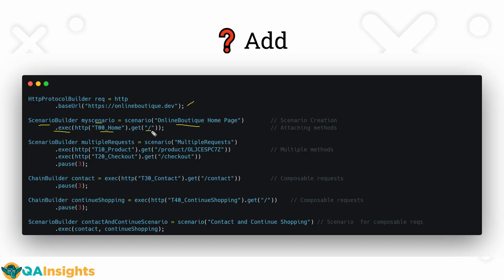Now we are going to attach multiple methods to the scenario. We create a new object called multiple requests, naming the scenario as 'multiple requests', and we attach three methods: dot exec to launch the product, dot exec again to launch the checkout, and we pause for three seconds. This is how you attach multiple methods.